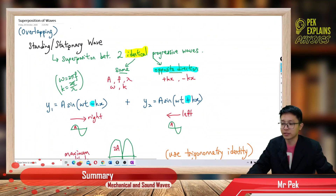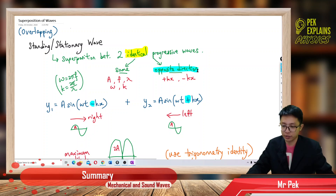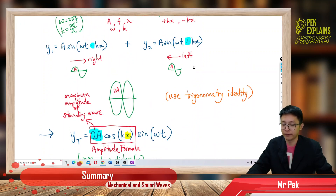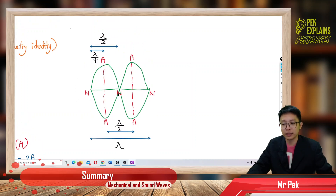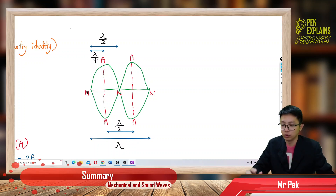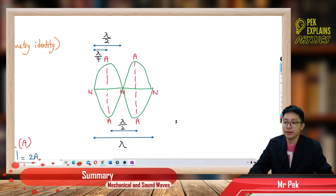Stationary wave is formed by the superposition between two identical progressive waves traveling in opposite direction — one to the right, one to the left. Between node and antinode is one quarter lambda; between node and node is half lambda; between antinode and antinode is also half lambda; but between a node and the second consecutive node is one lambda. Stay tuned for the third part. See you, bye!